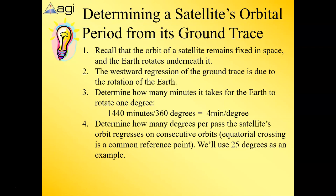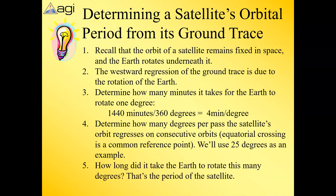Now let's say we have a ground trace that shows 25 degrees. With each pass, the ground trace moves west 25 degrees. From that, we do some simple math to find the period. We take 25 degrees and use our conversion factor of four minutes per degree, and we get 100 minutes. Pretty cool.